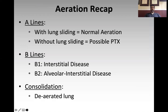To recap: A-lines can indicate either normal lung with lung sliding or pneumothorax without lung sliding. B-lines indicate interstitial alveolar disease — B1 lines suggest a more interstitial process, B2 lines suggest an alveolar plus interstitial process. Consolidation patterns suggest de-aerated lung. And we discussed identifying and characterizing pleural effusions.